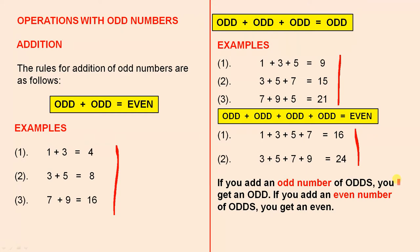Let's look at the first half. If you add an odd number of odds, you get an odd. There are three odds, so it gives you an odd. Now for the even number of odds, there are two odds — that's an even number, of course, there are two of them. Two is an even number, so you get an even.